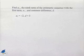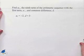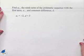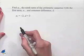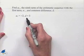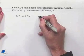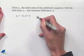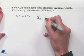Here's another problem dealing with arithmetic sequences. Find a₉, the ninth term of the arithmetic sequence with first term a₁ and common difference d. Our problem gives us that a₁ = -2 and d = 3. The formula for an arithmetic sequence is aₙ = a₁